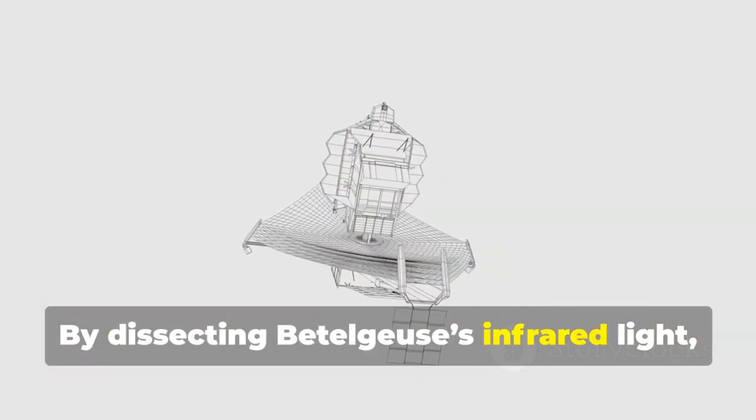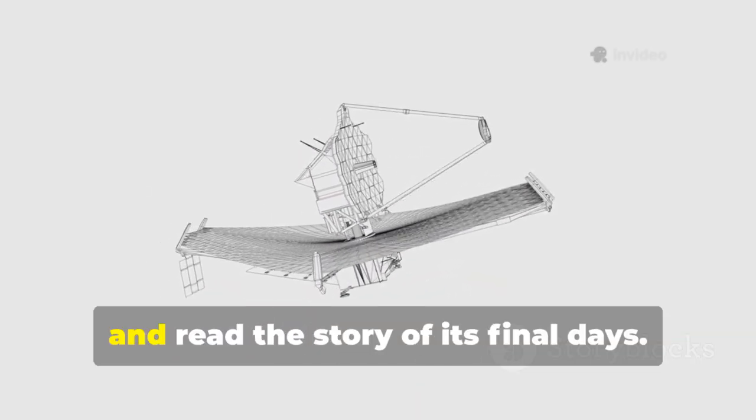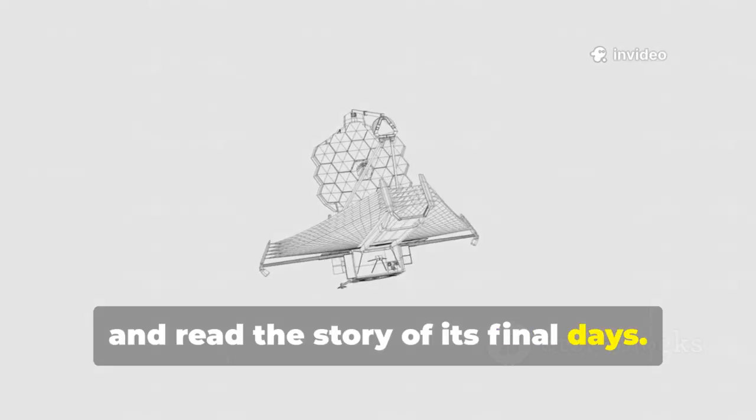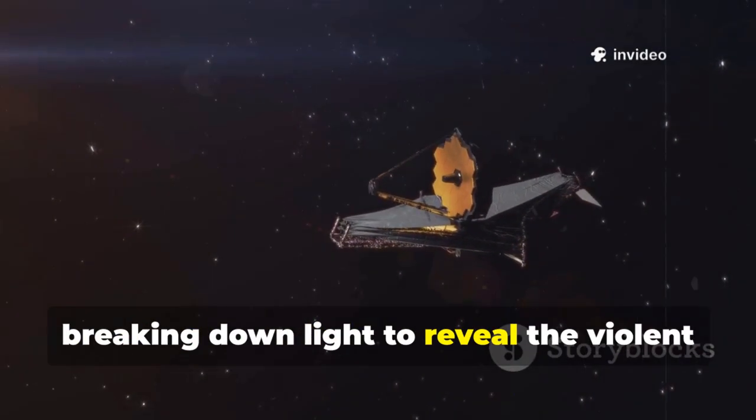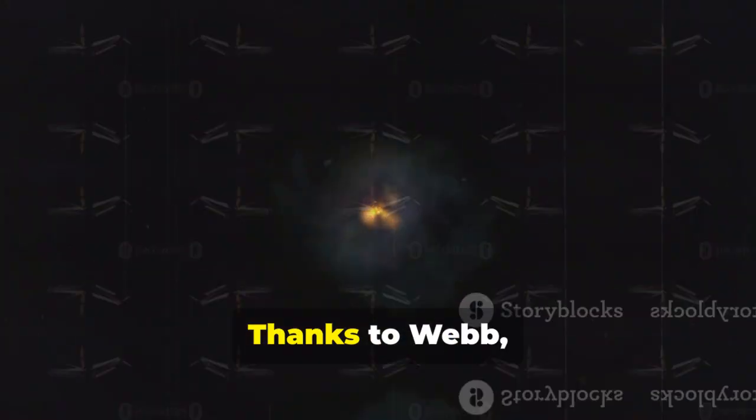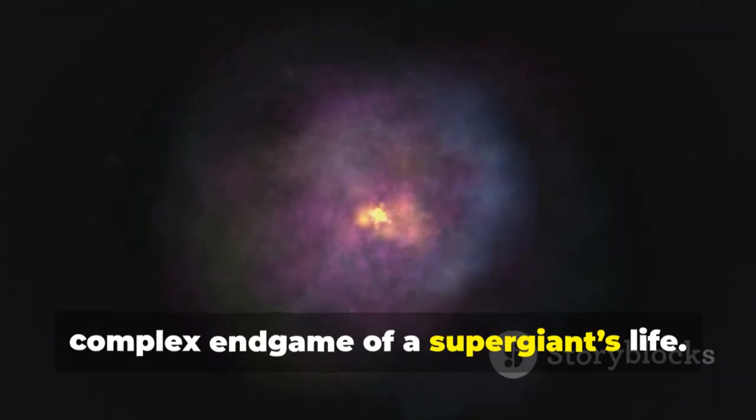By dissecting Betelgeuse's infrared light, scientists can map molecules, measure speeds, and read the story of its final days. Webb's superpower is spectroscopy, breaking down light to reveal the violent processes inside Betelgeuse. Thanks to Webb, we're witnessing the frantic complex endgame of a supergiant's life.